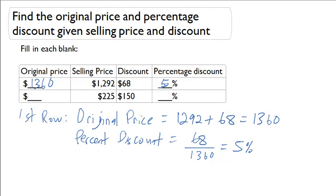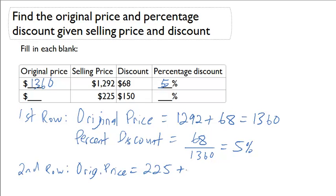Let's repeat that process for the second row. For the second row, my original price will equal $2.25 plus $1.50, which is going to be $3.75. So the original price in the second row had to be $3.75.